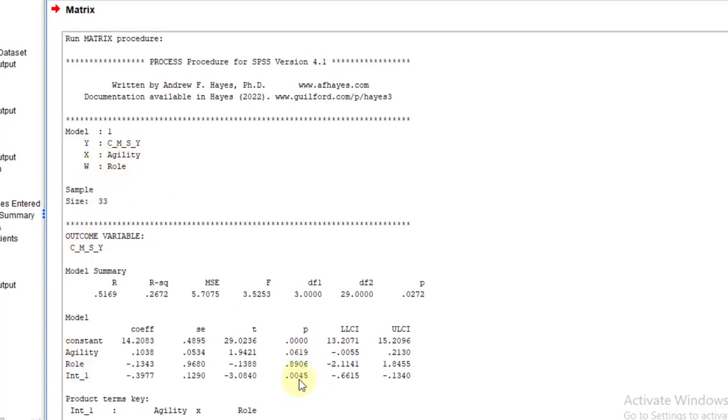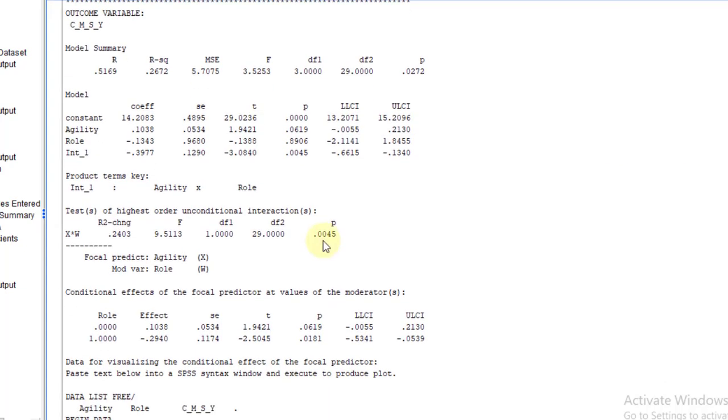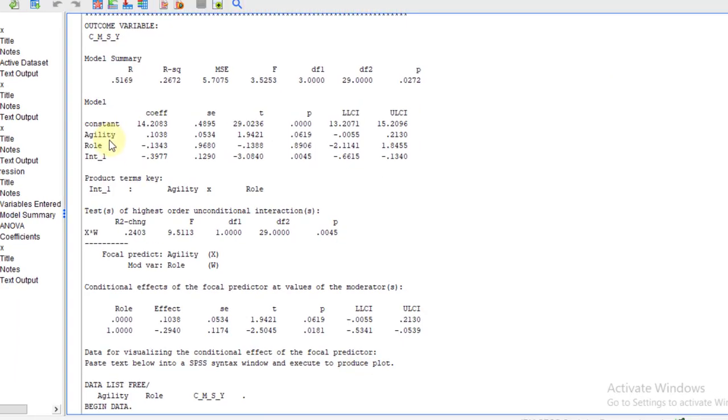Because the p-value is less than 0.05, further, there is no zero between lower confidence and upper confidence. Further, if we go, the test for the higher order unconditional interaction, this is same as this row interaction 1. So we got our p-value less than 0.05 and significant.